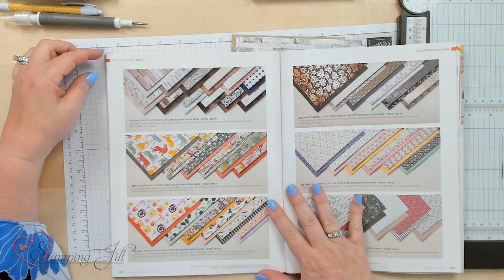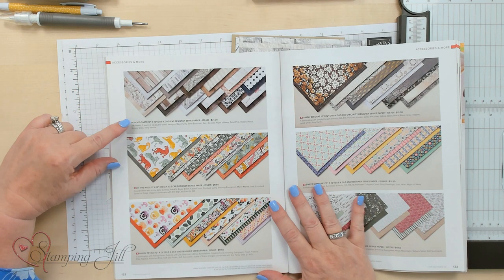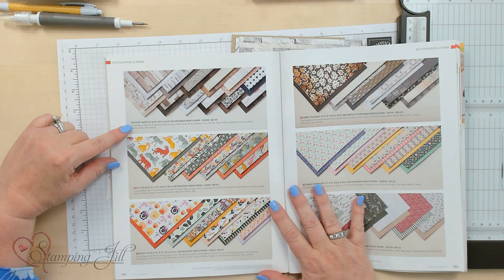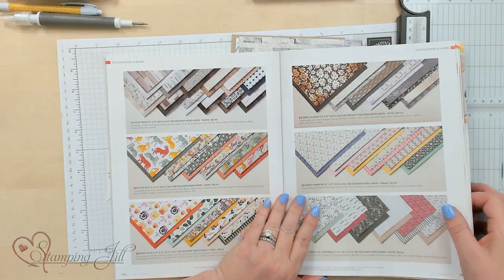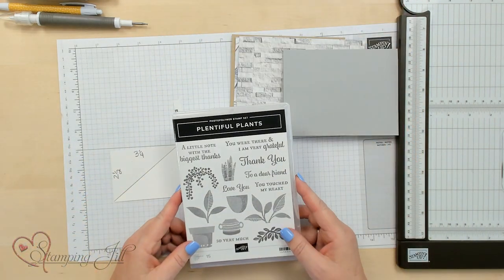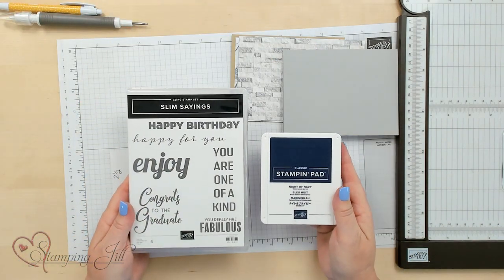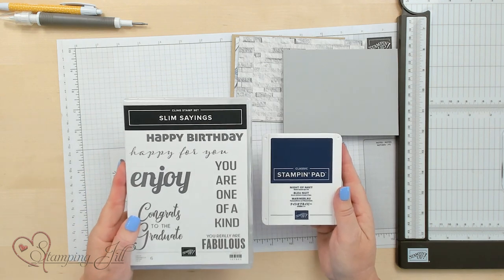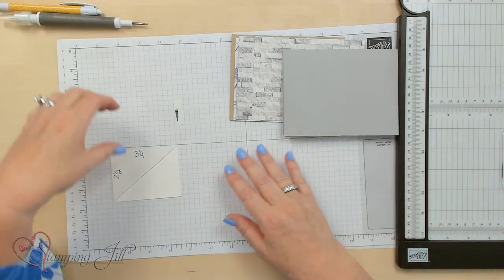I'm going to be using today In Good Taste 12 by 12 designer series paper. This is retiring soon so you may want to get it. It's $21 for a package of 24 double-sided sheets. It's really good for masculine cards and I'll be using that with the stamp set Plentiful Plants and the Slim Sayings set which is also retiring, so if you love what I'm showing you, you may want to get those right away.